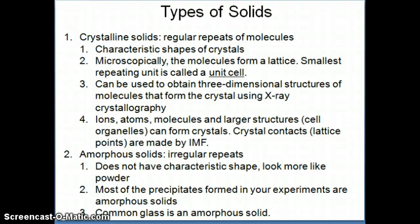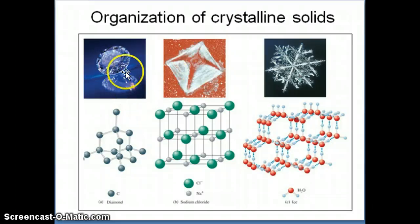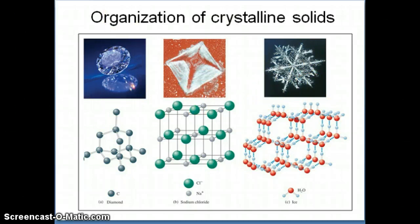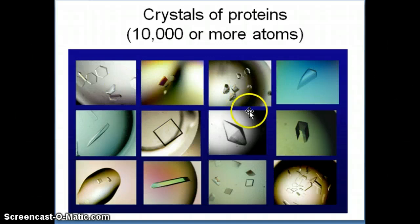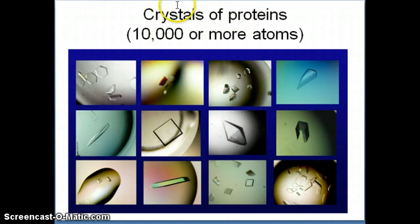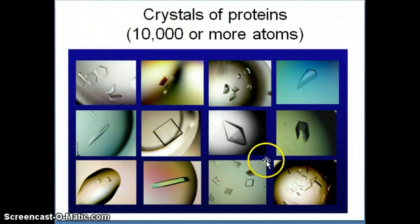Now let's talk briefly about x-ray crystallography, a really important technique. You can get crystals from just atoms or ions, or you can also get crystals of molecules like water. But as I said, you can also get crystals from very large particles — for example, different types of proteins. Proteins in your cell all look very different from each other, but it turns out you can make them form crystals. As a result, you can then use those crystals to look at what the protein actually looks like in three dimensions. These are just some examples of really beautiful protein crystals that you can shoot with x-ray to obtain information about the structure of the proteins.